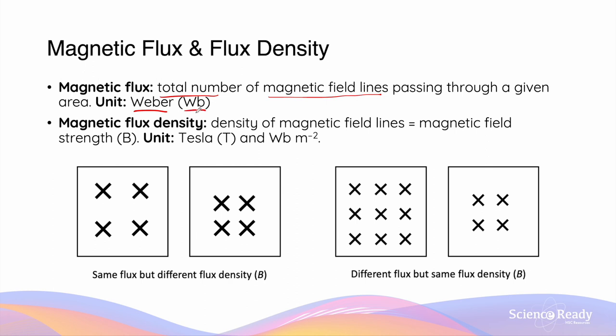On the other hand, magnetic flux density is a measurement of the density of the field lines in the given area, rather than the total number of field lines. The word density refers to how closely the field lines are oriented together. Magnetic flux density is more commonly referred to as the magnitude or strength of the magnetic field, represented by the symbol B and measured in the SI unit of Teslas, or sometimes in Webers per meter squared.